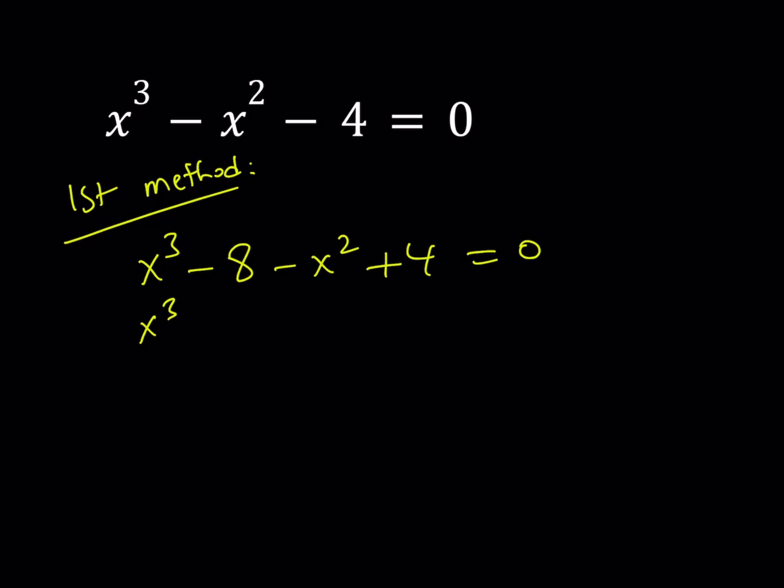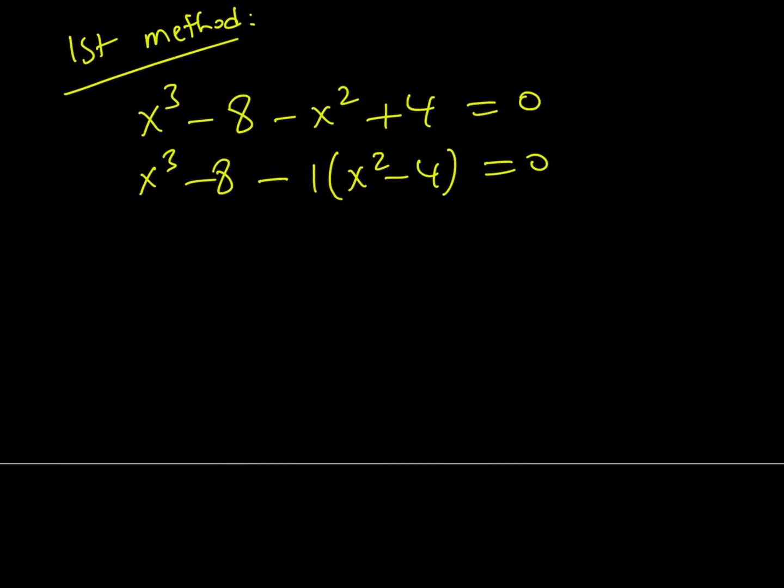Notice that I can take out a negative 1 here and write this as x squared minus 4 and that becomes difference of 2 squares. And x cubed minus 8, as you know, is a difference of 2 cubes. So let's go ahead and factor it.